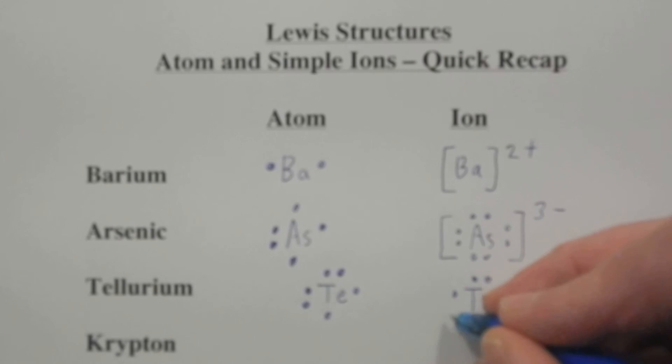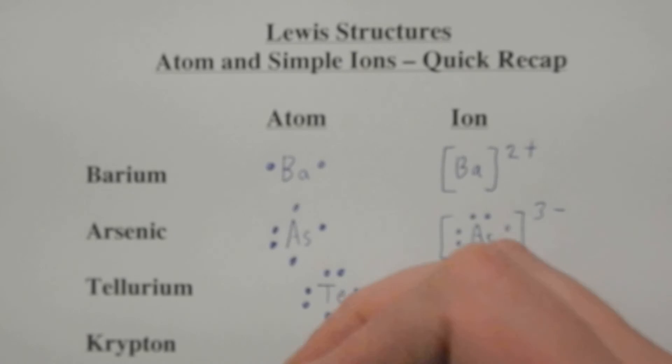And it's a non-metal as well. So we add two. We're adding two negatives. So it's two minus. Krypton from the Bruins family.